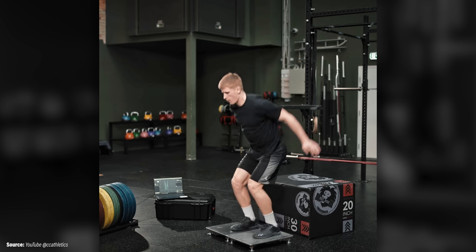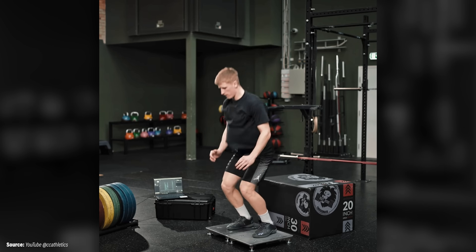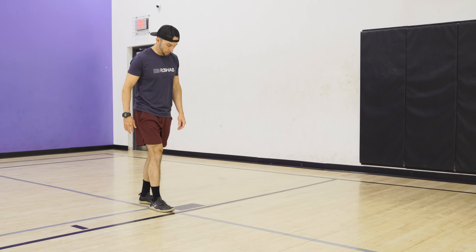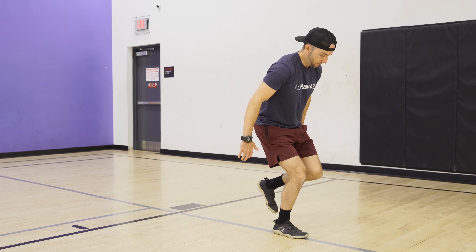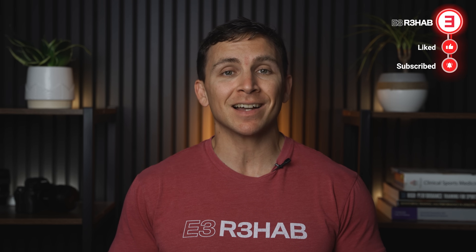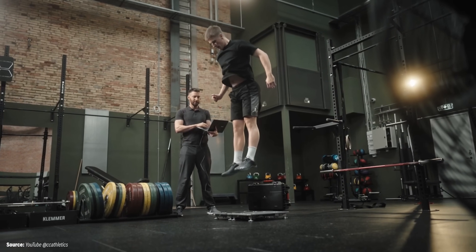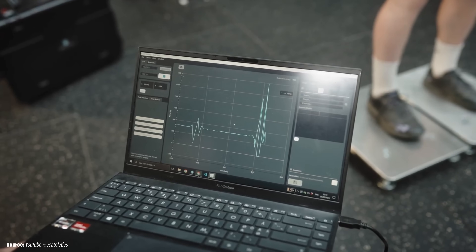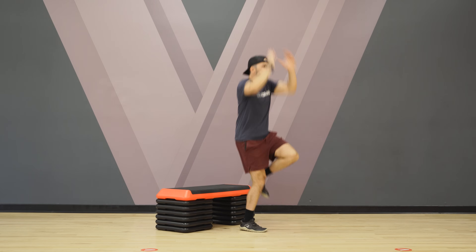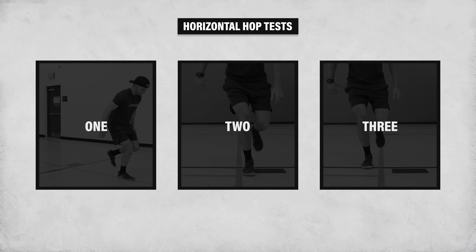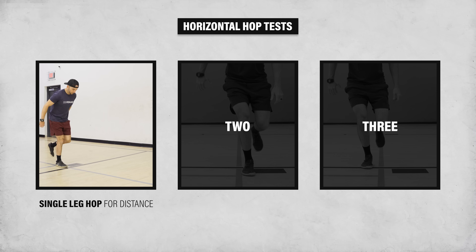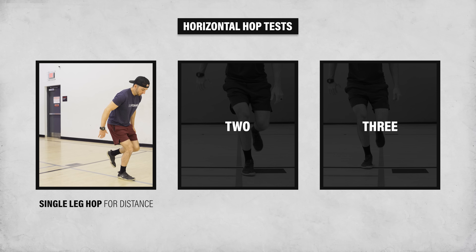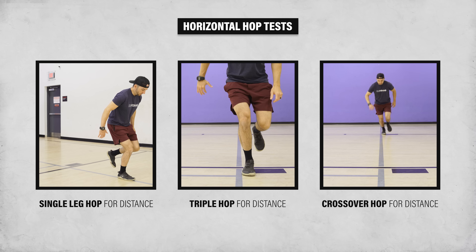To assess your jumping and landing abilities, physical therapists may use force plates or some other tracking system. However, there are less sophisticated ways for you to do this as well. The goal is always to be as objective as possible, but it's not always possible and oftentimes good enough is better than striving for perfection. Three commonly used horizontal hop tests are the single leg hop for distance, triple hop for distance, and crossover hop for distance.